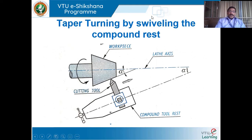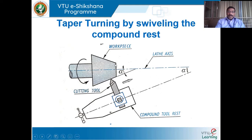The first method is taper turning by swiveling the compound rest. Here the workpiece is held in the chuck. The compound tool rest can be swiveled to any angle — the entire compound tool rest can be rotated to any angle. This angle is obtained using the trigonometric relation: alpha equals tan inverse of (D minus d) divided by twice the length. Capital D refers to the major diameter, small d refers to the minor diameter, and L refers to the length of the specimen — the straight length parallel to the axis of the job.